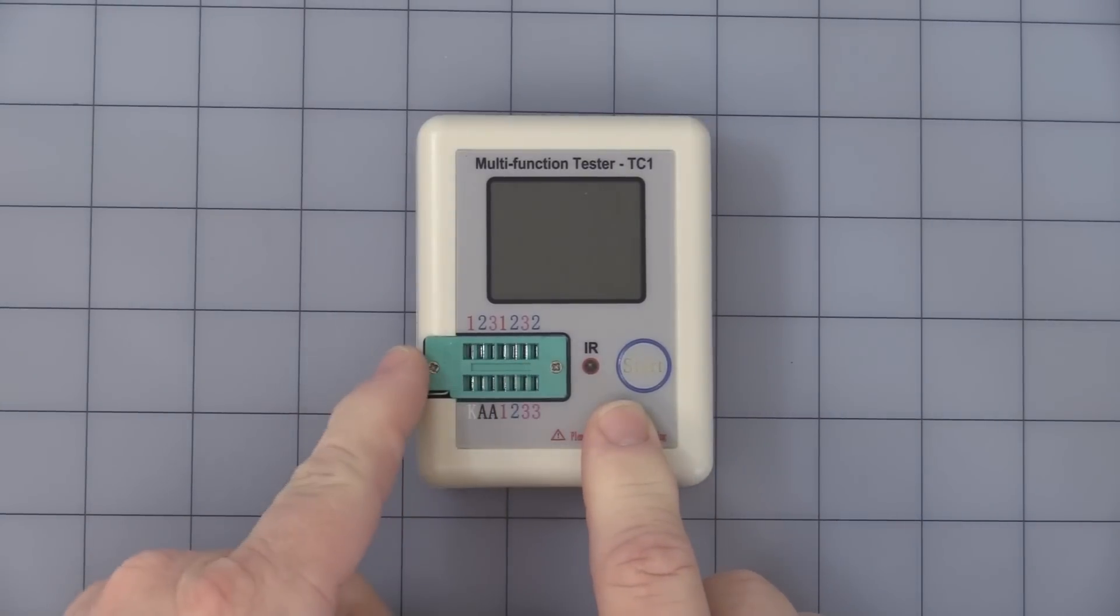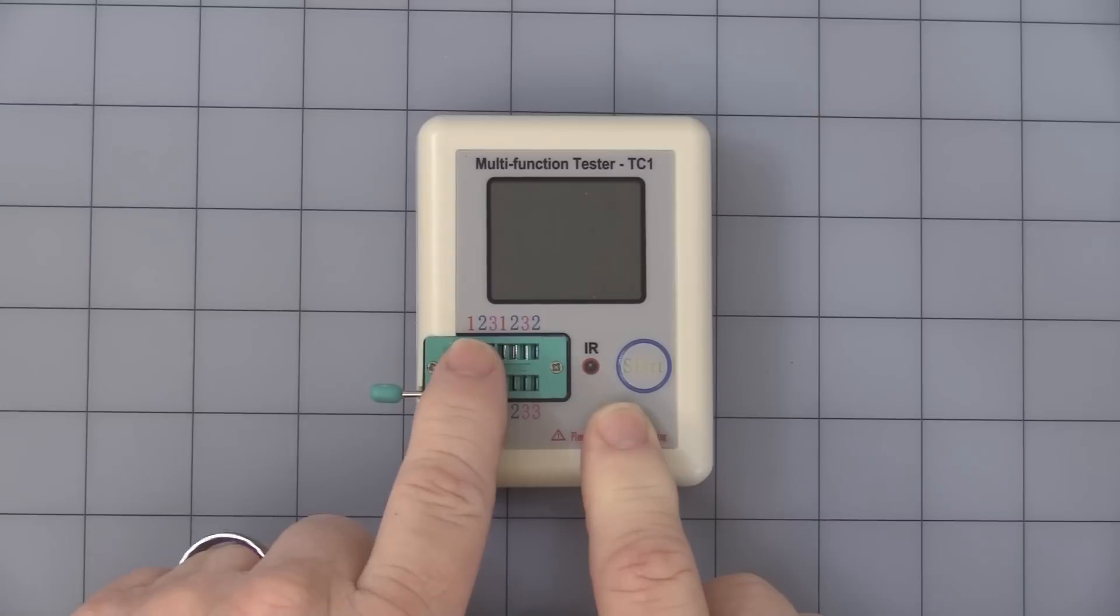The zip socket is labeled one, two, three in different positions. At the lower left it says KAA. That's for Zener diodes only. I'll explain that to you in a moment.